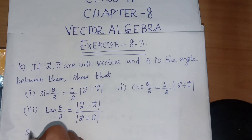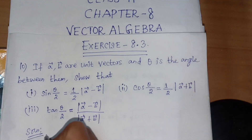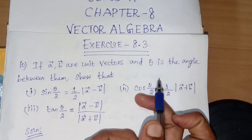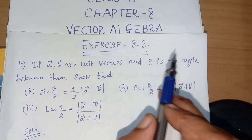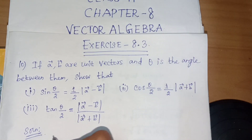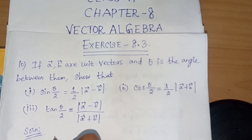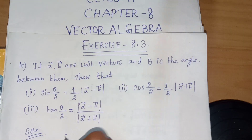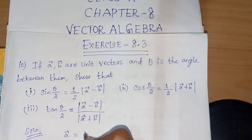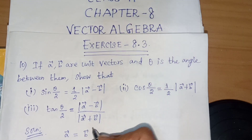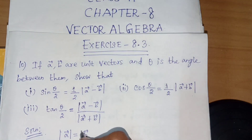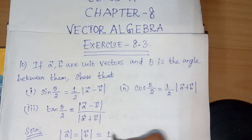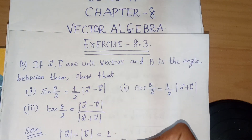Solution. A vector and B vector are unit vectors, so |A vector| equals |B vector| equals 1.